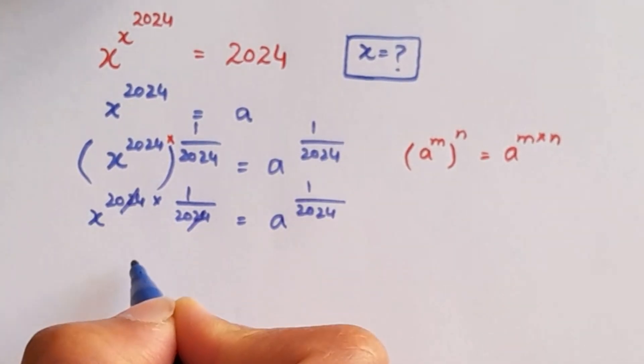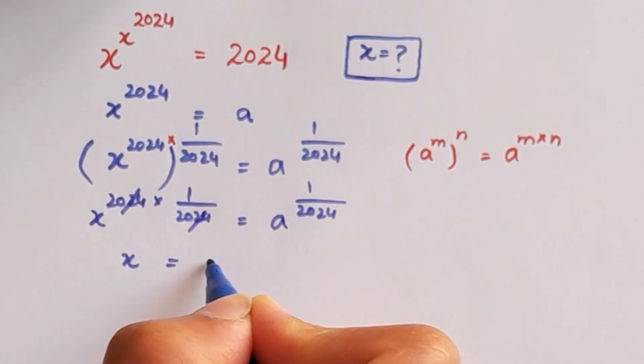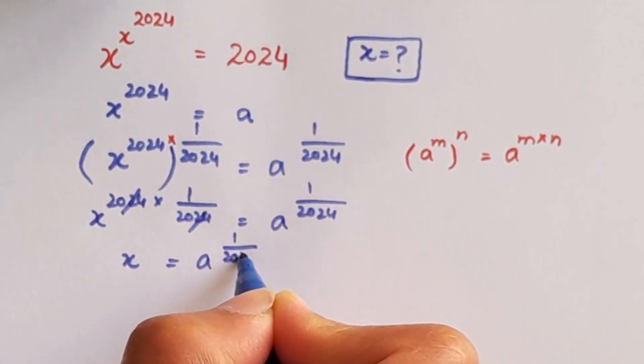We know that this and this will be cancelled out. We get the value of x which is equal to a to the power 1 over 2024.